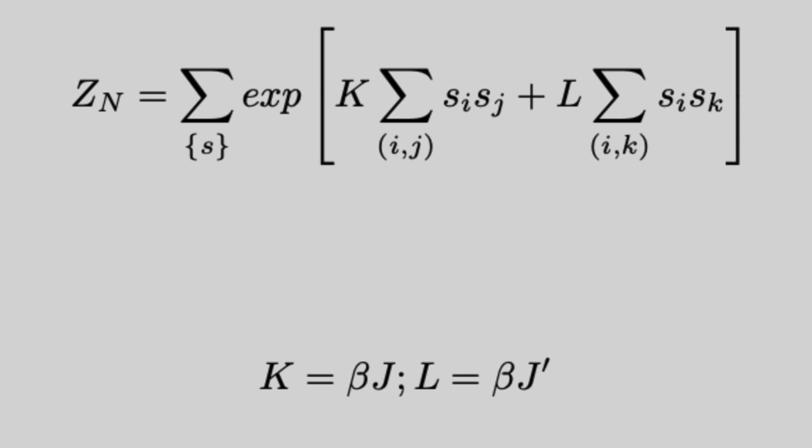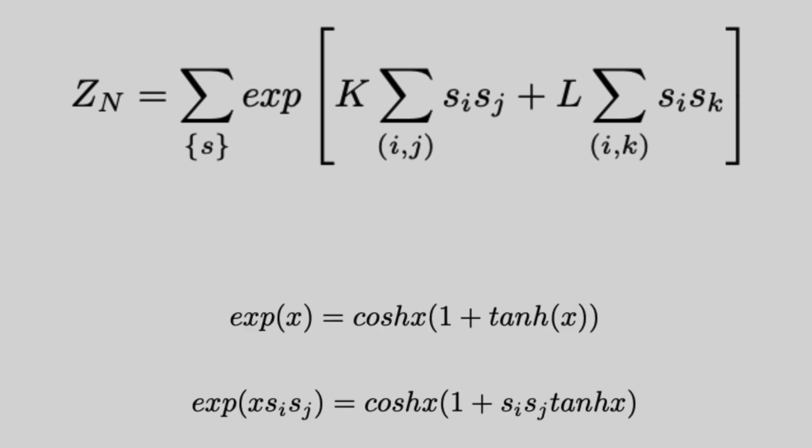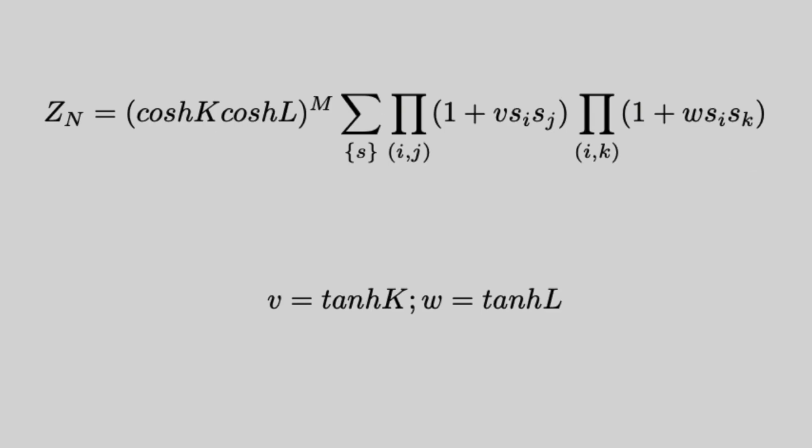Remember, this notation means we're only looking at the nearest interactions. Using some exponent identities, we can rewrite the partition function as follows. Now, in the high temperature limit, this quantity V and W approaches zero. And so we need to take an expansion of this complicated looking product and something.